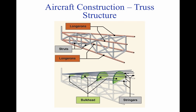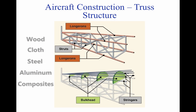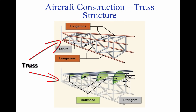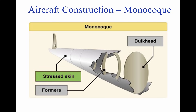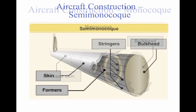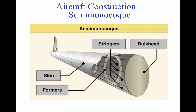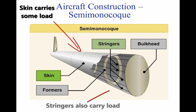Aircraft have been made from all different materials, including wood, cloth, steel, aluminum, and more recently, composite materials. A truss-style fuselage structure is not used very often because it lacks a streamlined shape. As technology progressed, designers started covering the truss members to make the aircraft more streamlined and improve performance. A monocoque fuselage design relies on the skin of the aircraft to take most of the load, stretched over internal bracing. The semi-monocoque design combines the monocoque and truss designs; the skin still supports some load, while the stringers also carry load, improving overall fuselage strength.